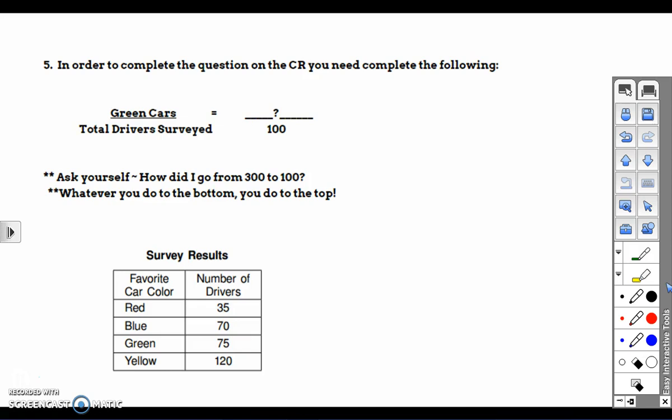She says in order to complete the question on the CR, you need to complete the following. She says you have to look at the number of green cars to the total number of drivers surveyed. And then it must be a percent problem because it says what out of 100. So you must be looking for what percent out of 100 drive green cars or like green cars.